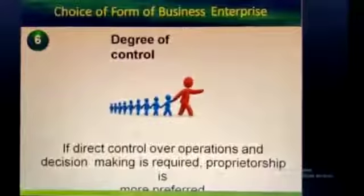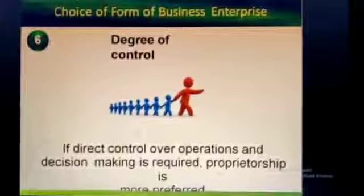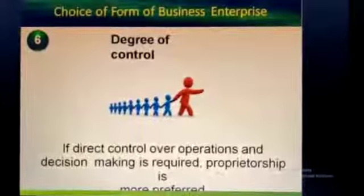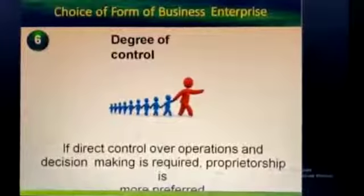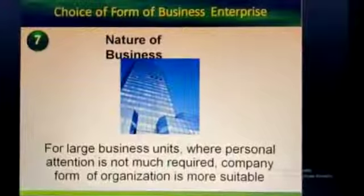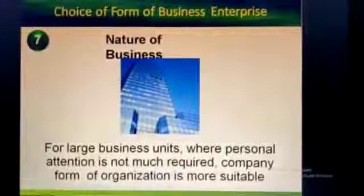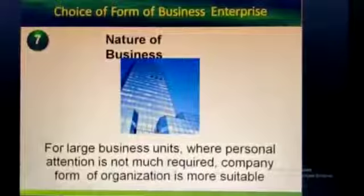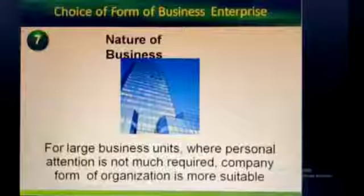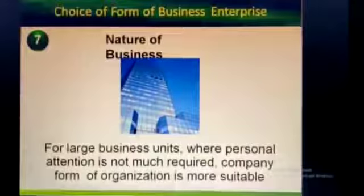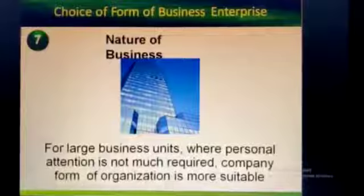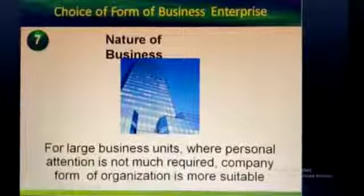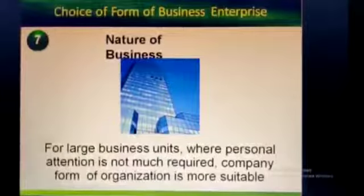Sixth is degree of control. The choice of form also depends on the degree of control desired. If direct control over operations and decision-making is required, then proprietorship is more preferred. But if the owners are ready to share control and decision-making, then partnership and company forms can be adopted. Seventh is nature of business. The nature of business is also considered while selecting a suitable form. If direct personal contact with customers is needed, sole proprietorship is preferred. Whereas if professional services are required, partnership is more suitable. For large business units where personal attention is not much required, the company form of organization is more suitable. These are the factors to be considered while choosing a suitable form of business organization.